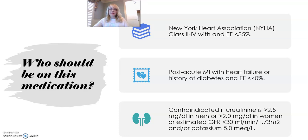The second indication is post-acute MI with heart failure symptoms or a history of diabetes and an ejection fraction of less than 40%. The caveat is that they should already be on other guideline-directed medical therapy such as beta blockers, ACE inhibitors, and ARBs. If your patient is tolerating those medications — meaning they're not hypotensive and their renal function is stable — then consider adding the aldosterone antagonist for further reduction in morbidity and mortality.